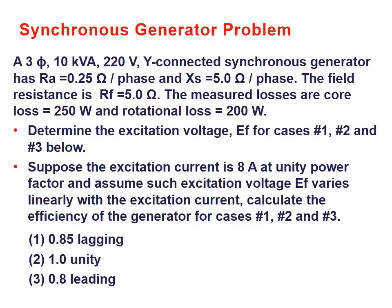Let's work a problem based on one of the homework sets. Suppose we have a three-phase 10 kVA, 220-volt Y-connected synchronous generator with armature resistance 0.25 ohms per phase and synchronous reactance of 5 ohms per phase. Because values are given per phase, we will use a per-phase equivalent model. The field resistance is 5 ohms. The measured losses are core loss 250 watts and rotational loss 200 watts. Find the excitation voltage for cases 1, 2, and 3.